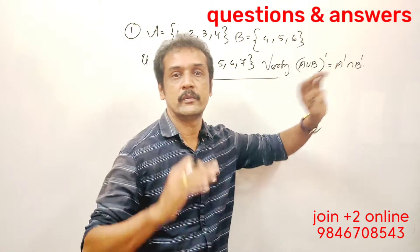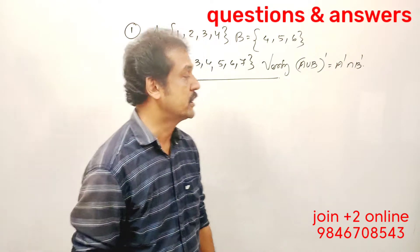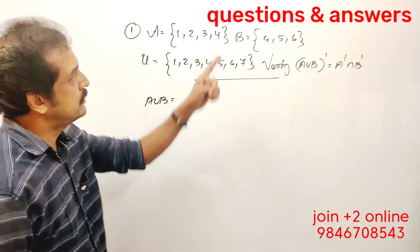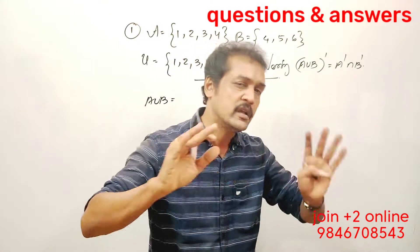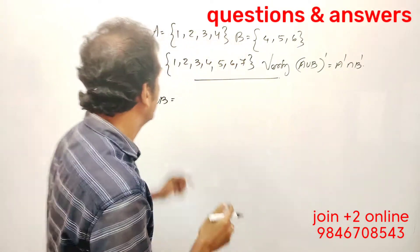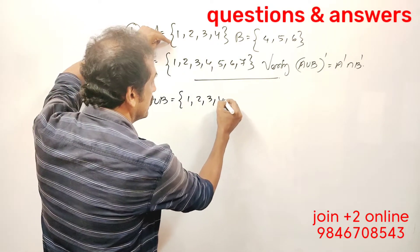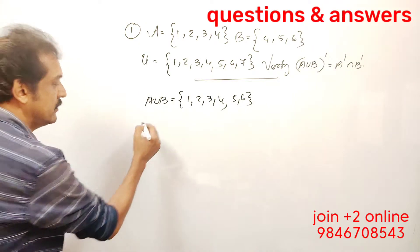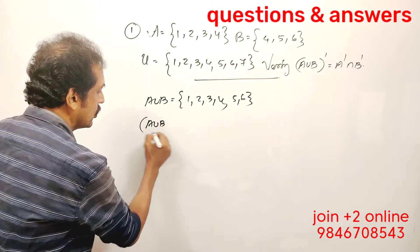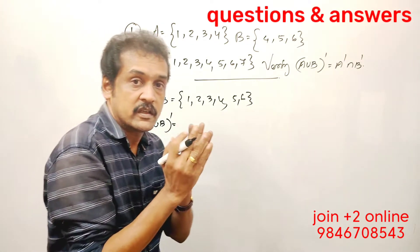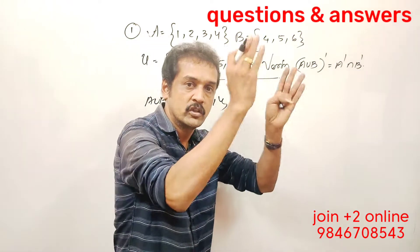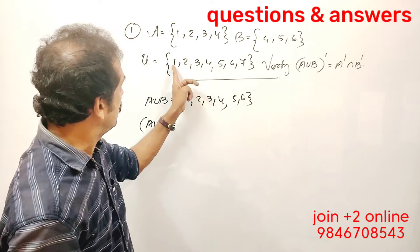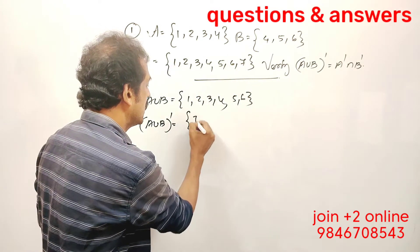Let's do A union B. A union B uses all different members. So A union B is {1, 2, 3, 4, 5, 6}. Next, A union B whole complement — the complement. The elements in U but not in A union B: that is {7}.